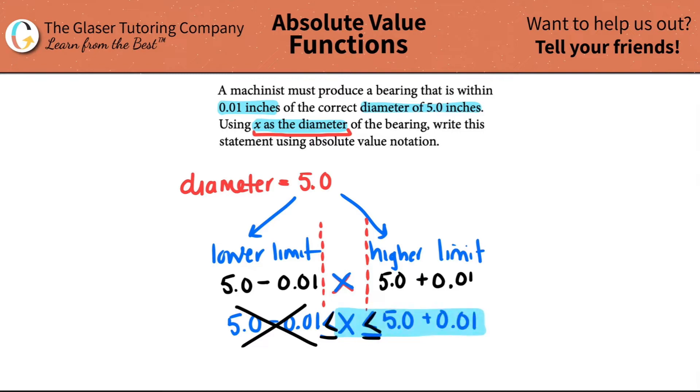So I'm just going to rewrite that. So we have x, which is less than or equal to 5.0 plus 0.01. And now the difference, or what the bearing has to be within, which is this number, is what you want to solve for. So that means that the correct diameter, the 5.0, has to be brought over with the actual diameter that you have, x. So I'm going to subtract by 5.0 on both sides. And you get x minus 5.0 just has to be less than or equal to that within value, the 0.01 of an inch.